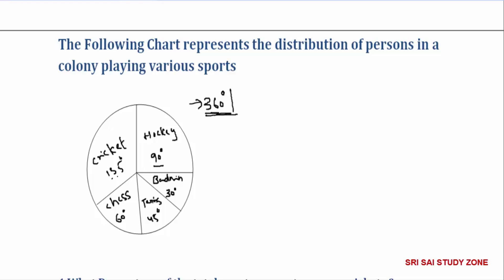In this pie chart, cricket is 135 degrees, chess is 60 degrees, tennis is 45 degrees, and badminton is 30 degrees. If you have a question about cricket, observe all the data carefully first before solving. You need to solve these problems step by step.